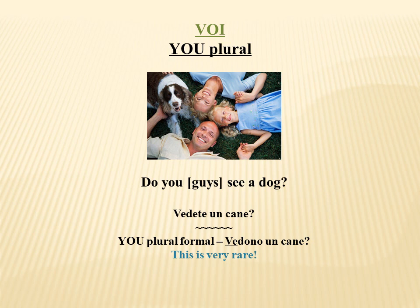Unlike English, Italian also distinguishes between the singular and plural you. The subject pronoun that refers to you plural is voi, and voi has its own verb form as well. So if the speaker wants to ask do you see a dog to a group of two or more people, she must say Vedete un cane? On rare occasions, Italians will use a formal form of the you plural verb, which employs the third person plural. Most of the time, however, the voi verb forms are used in both formal and informal situations.